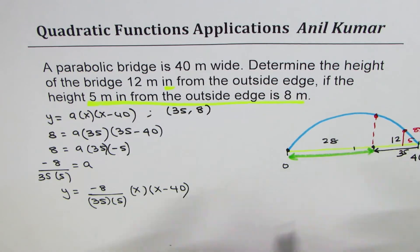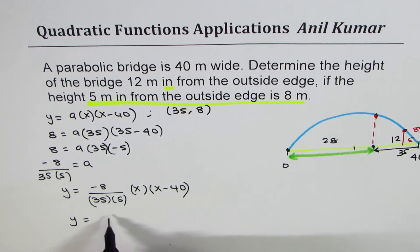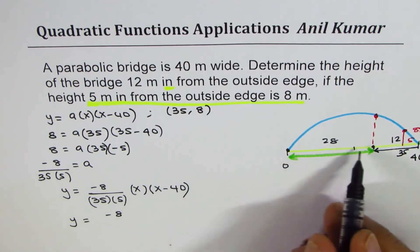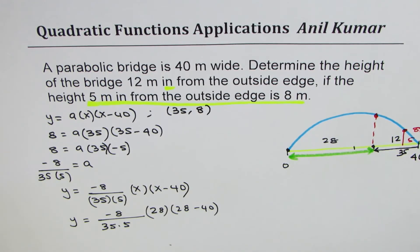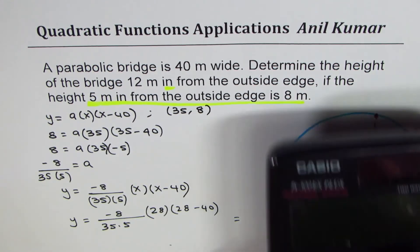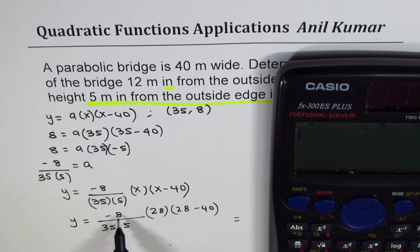12 meters in from outside means 28 meters out from here. We need to find y, so we'll just substitute 28 for x. Minus 8 over 35 times 5, and we'll add 28 here and 28 minus 40. 28 minus 40 should be 12. Negative sign - since this is negative, we are getting a positive answer for sure.